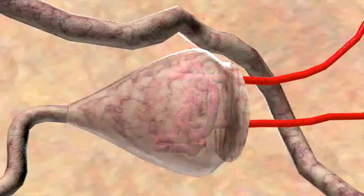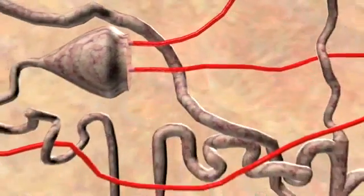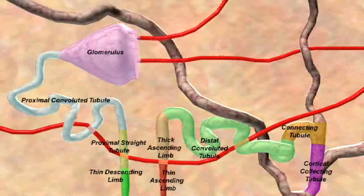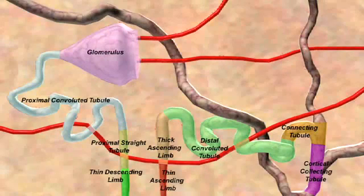About 99% of this volume is reabsorbed, leaving only a small volume to be excreted as urine. Each section of the nephron has a different morphology of cells making up the single cell wall which causes differences in water permeability and ion transport.